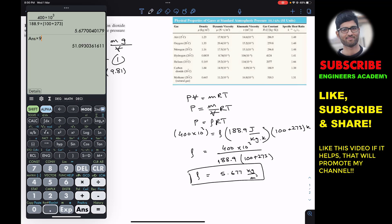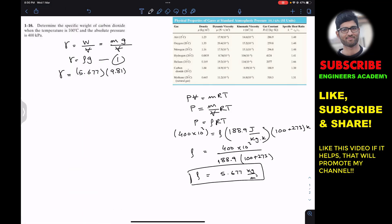This gives us 55.691, and the units will be Newton per meter cube since this is the weight per unit volume. So this is the specific weight of carbon dioxide at 100 degrees C and 400 kilopascal pressure.